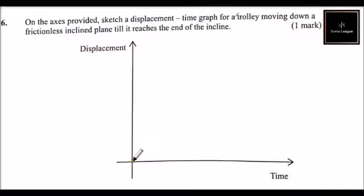Question number six: On the axis provided, sketch a displacement-time graph for a trolley moving down a frictionless inclined plane till it reaches the end of the incline. So the trolley will increase in speed as the slope is inclined, so there will be acceleration.